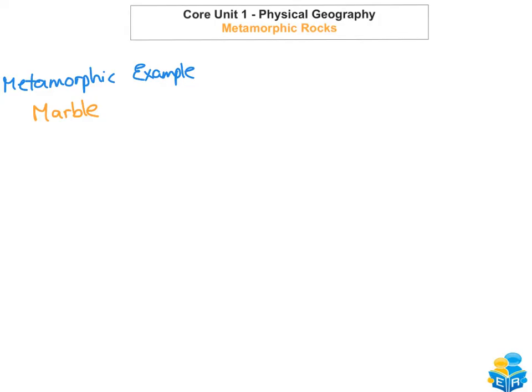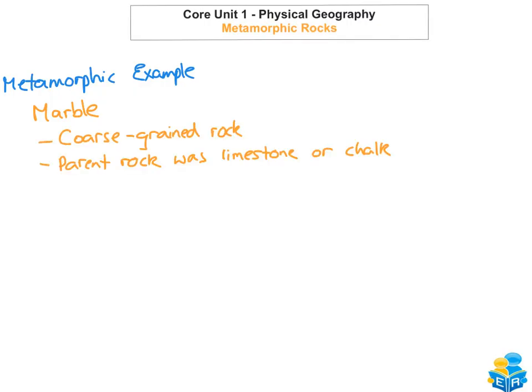We're going to look at an example of a metamorphic rock in detail — marble. First, marble is a coarse-grained rock, and its parent rock is the sedimentary rock limestone or chalk. Marble was changed because of regional metamorphism, and the original limestone structure is completely destroyed because of both the pressure and the heat.